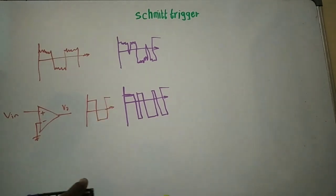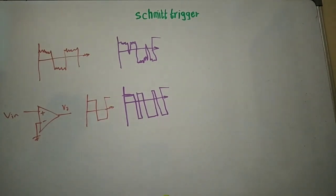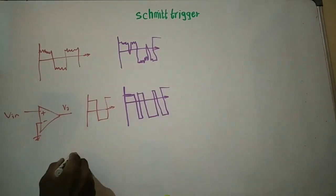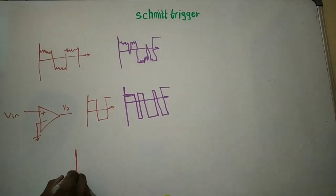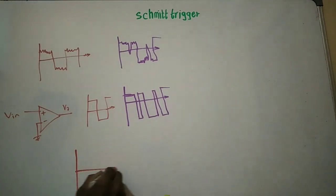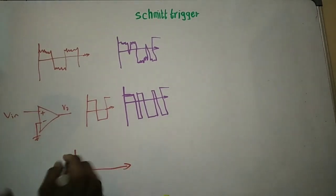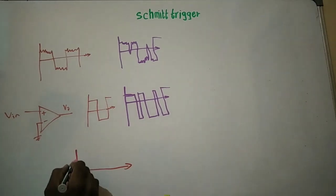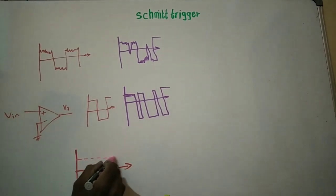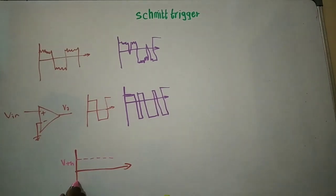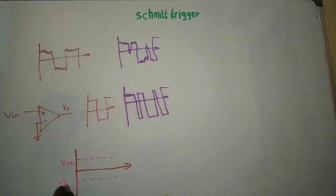So now Schmitt Trigger comes into picture. The idea of Schmitt Trigger is that here we have only one level, but in Schmitt Trigger they created two levels. In Schmitt Trigger we have two levels — we call them upper and lower threshold. So let's say this is the upper threshold, Vth positive threshold, and there is another negative threshold, minus Vth.